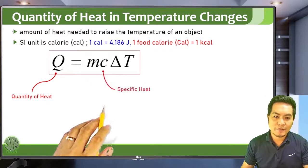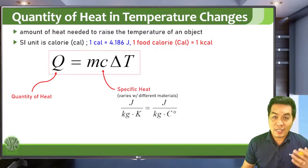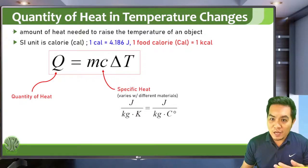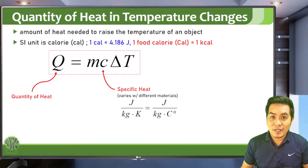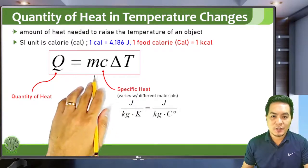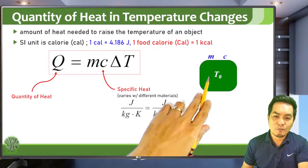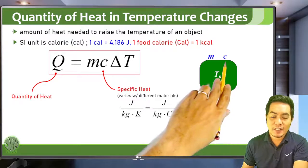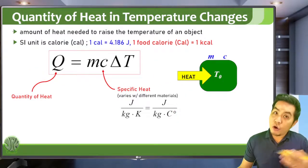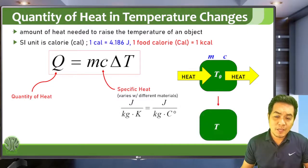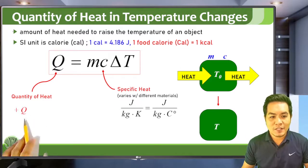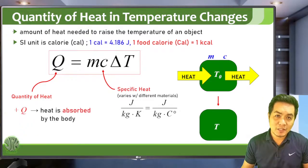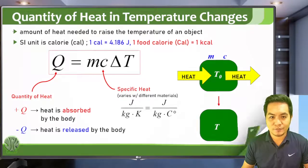In the formula Q = mcΔT, m is the mass of the object and c is the specific heat, which varies by material — similar to the coefficients of expansion. Delta T is the change in temperature. If an object with mass m, initial temperature T-naught, and specific heat c absorbs or releases heat, that causes its temperature to change. A positive Q means heat is absorbed; a negative Q means heat is released.